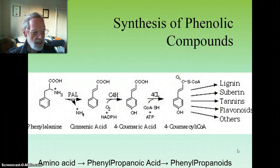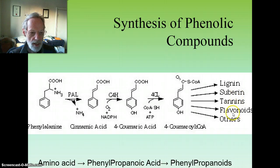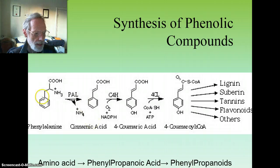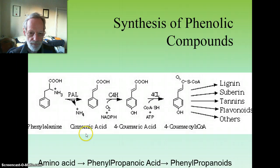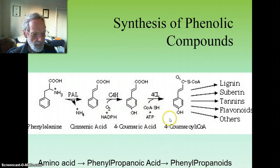For example, phenylalanine gives rise ultimately to lignin, suberins, tannins, flavonoids, and many others. The first step is a de-amination to a phenylpropanoid compound like cinnamic acid. Subsequently, phenylpropanoids are synthesized and made into these bigger molecules.